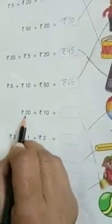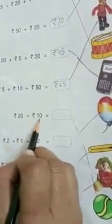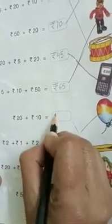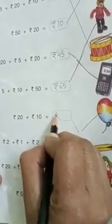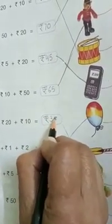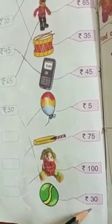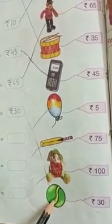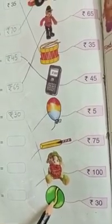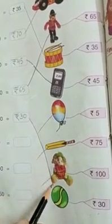Now next — rupees 20 plus rupees 10. 20 plus 10 is 30. Rupees 30. Now we will match it — the cost of this toy is rupees 30, so we will match it with this toy.